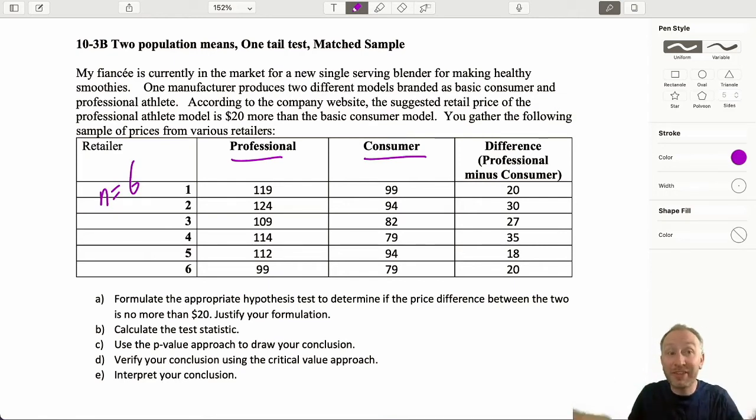Rather than going out to six retailers and getting a price of a professional athlete and six other retailers, because there's differences between retailers, here we have just six retailers and I'm getting two data points from each. Then we're calculating those individual difference values. That's how we're removing that source of variation by getting two data points from each of those retailers.